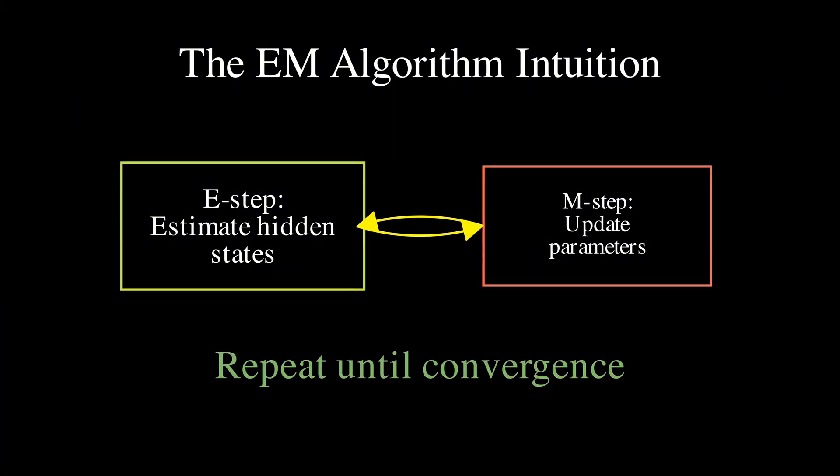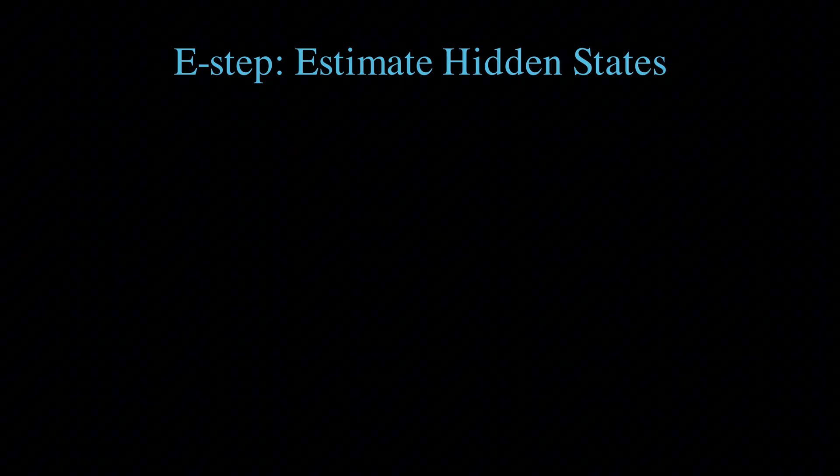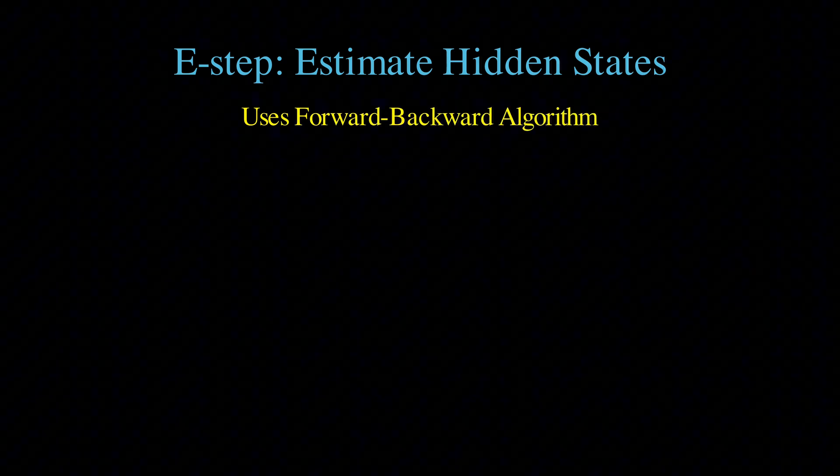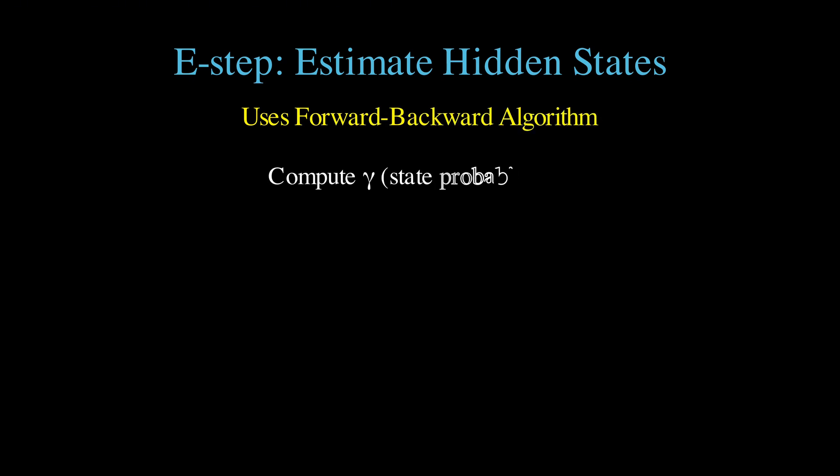Let me walk you through how this actually works step by step. The algorithm has two main phases that repeat over and over. The first phase is called the expectation step, or E-step, where we compute the expected values of being in each state at each time point, using the forward-backward algorithm that we covered in the last video.